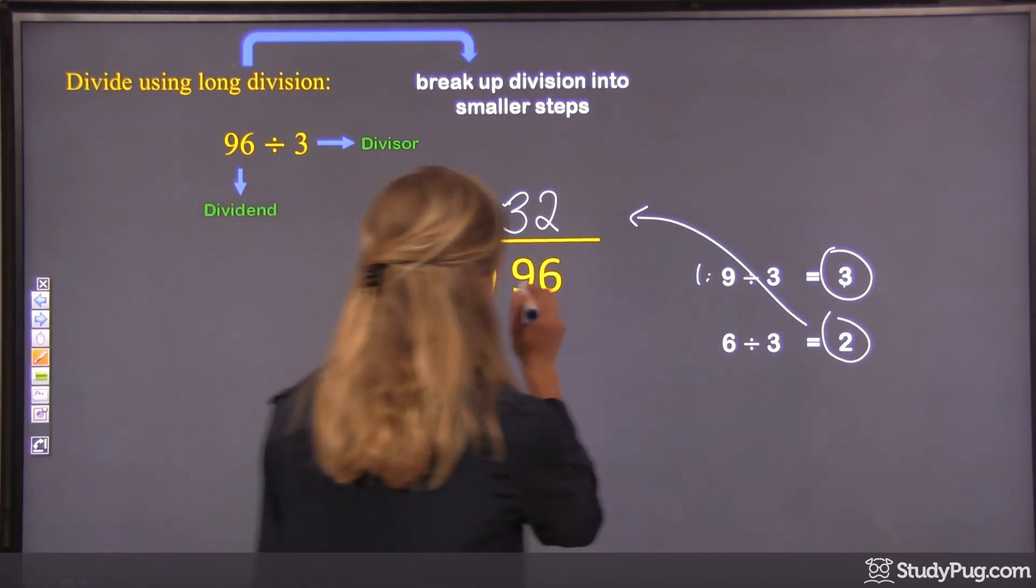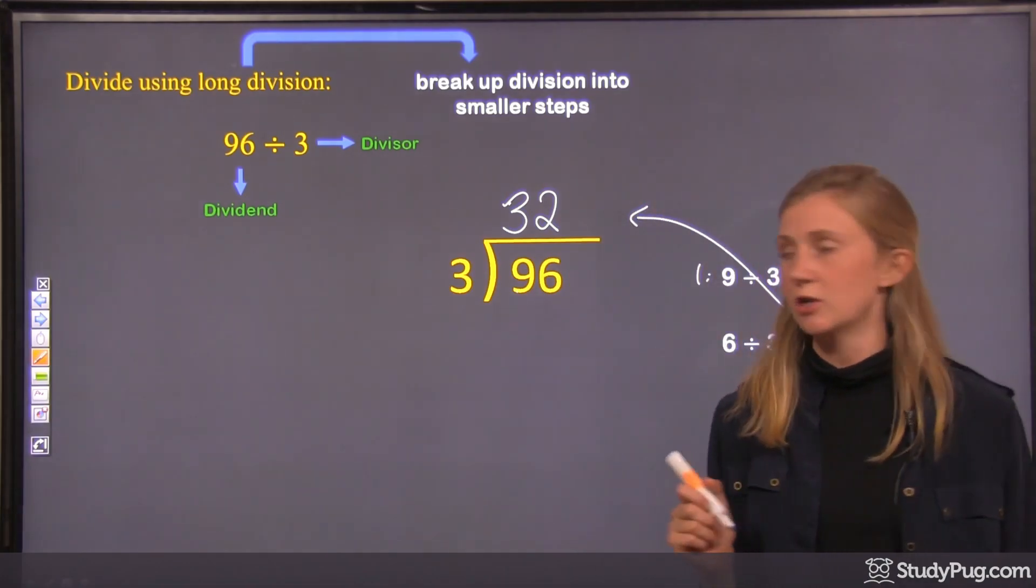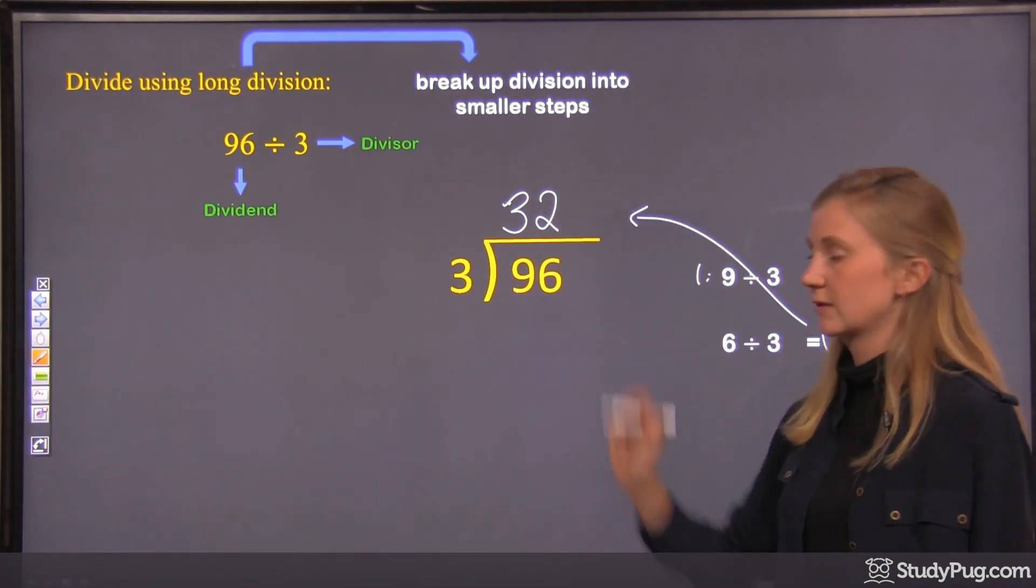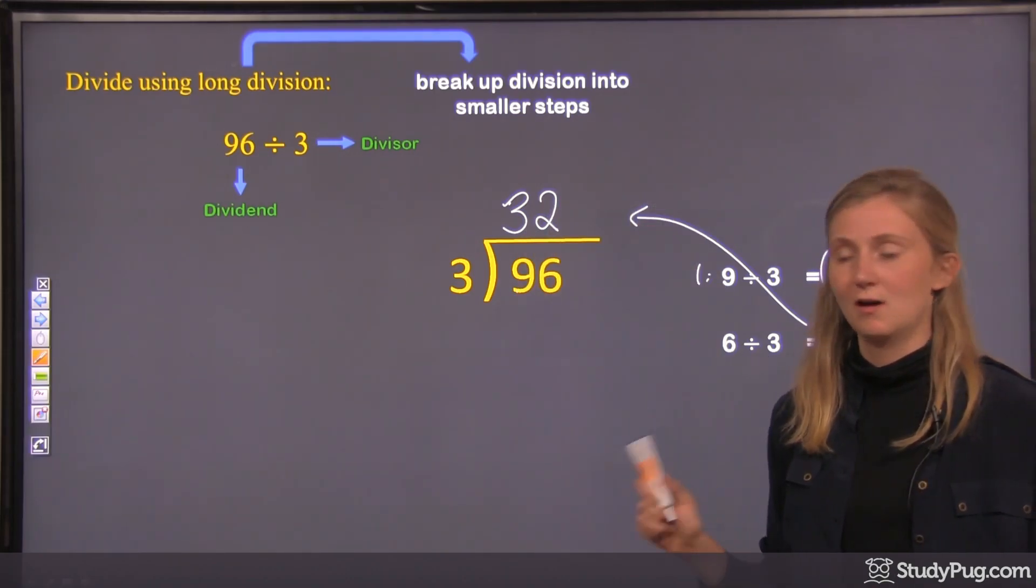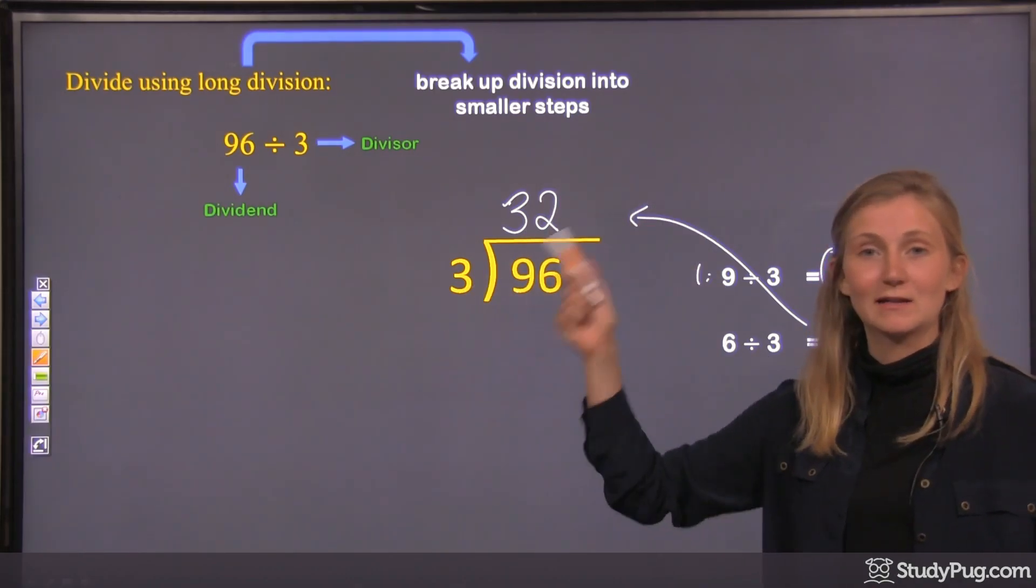All right, so now we're done, because we've gone through both of the place values in this question. We've done all the steps. So we're done now, and we've found the quotient, which is 32. So 96 divided by 3 is 32.